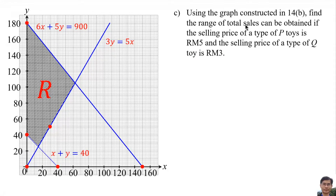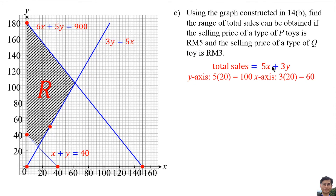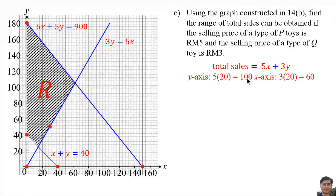The total sales equation is 5x plus 3y. We need to draw this equation on the graph. Normally we plot 5 on the y-axis and 3 on the x-axis, but 5 and 3 are too small, so I multiply both by 20 — plotting 100 on the y-axis and 60 on the x-axis. Connect both points.